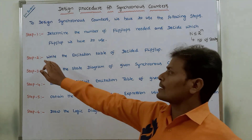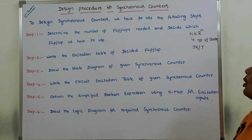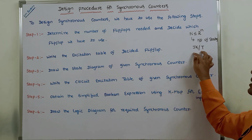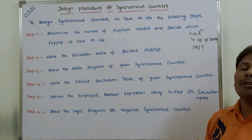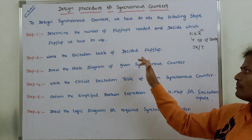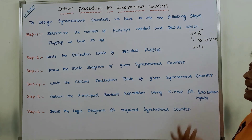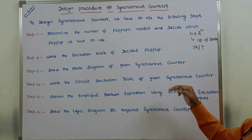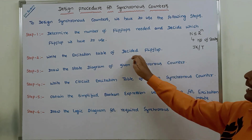The second step is to write the excitation table of the decided flip-flop. Once we decide which flip-flop to use among JK or T flip-flop to design the synchronous counter, we have to know the excitation table of that decided flip-flop.